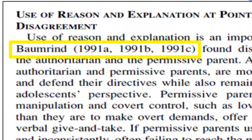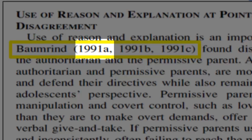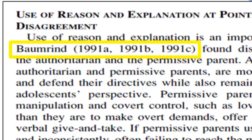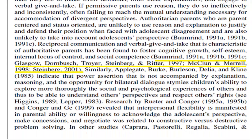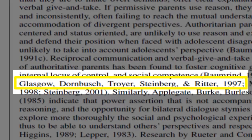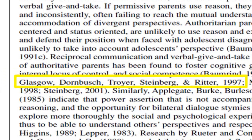In this example, the author is referring to three separate studies all done by the same researcher in 1991. The author uses A, B, and C to distinguish the different studies. Here, the author references several different studies by different researchers to prove his point. One of the studies was conducted by five researchers, so all of their last names and the year the study was published are included in parentheses.